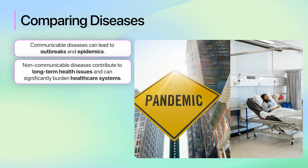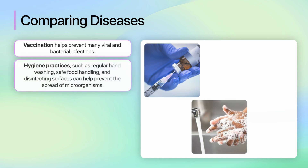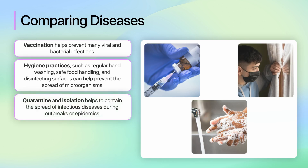Different methods are used to prevent people from being affected by communicable and non-communicable diseases. For communicable diseases, vaccination helps prevent many viral and bacterial infections. Furthermore, hygiene practices such as regular hand washing, safe food handling and disinfecting surfaces can help prevent the spread of microorganisms. Quarantine and isolation helps to contain the spread of infectious diseases during outbreaks or epidemics.